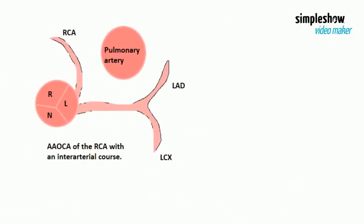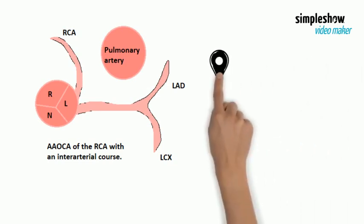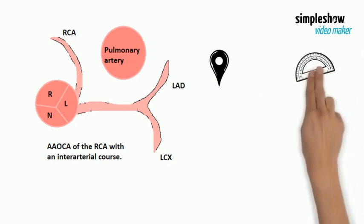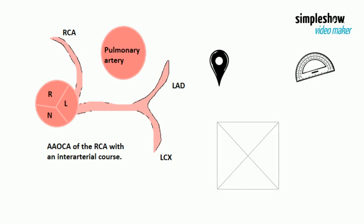We hypothesize that the hemodynamic significance of AORL with an intraarterial course differs according to the location of the anomalous RCA ostium, because the hemodynamic significance might depend on the degree of RCA ostium compression and/or the intra-arterial RCA segment length.